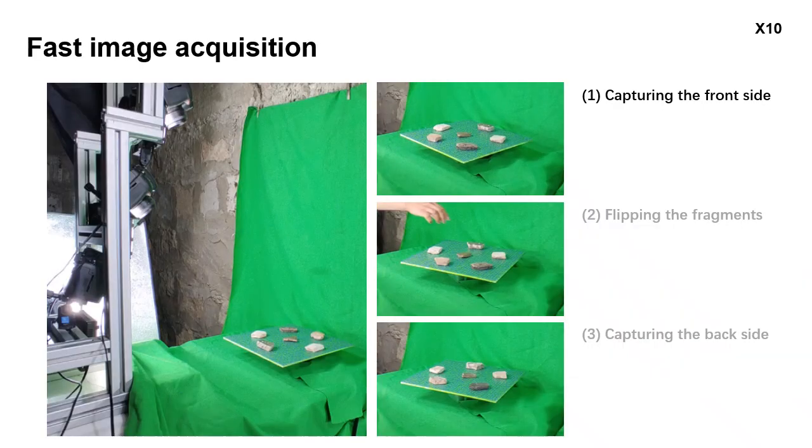To prepare input for our registration method, we build a customized device for fast image acquisition. It mainly consists of three cameras and a turntable.